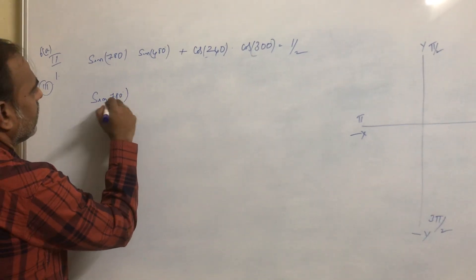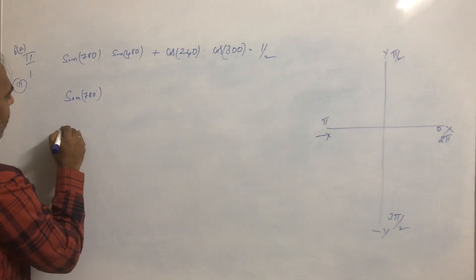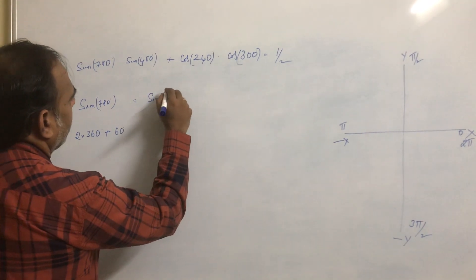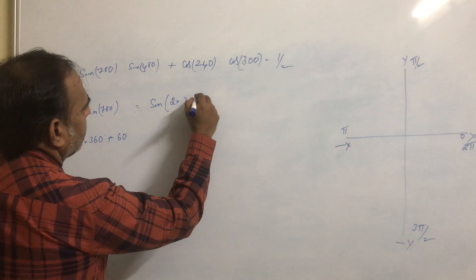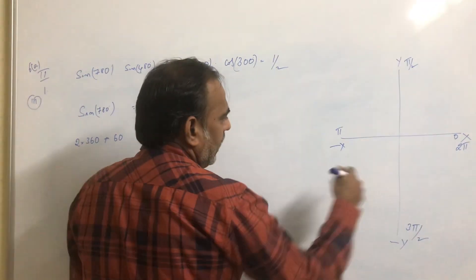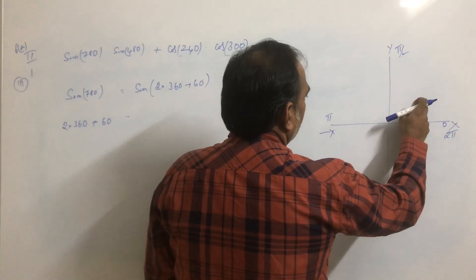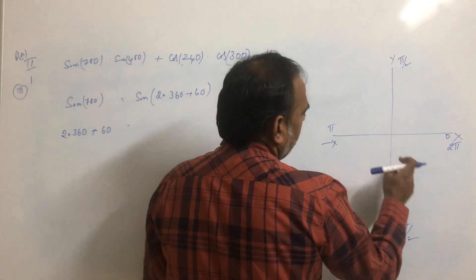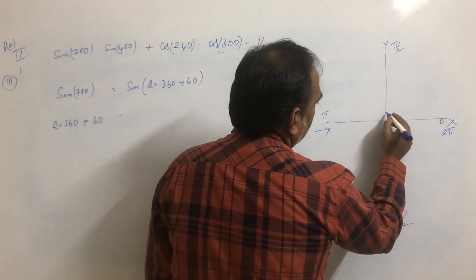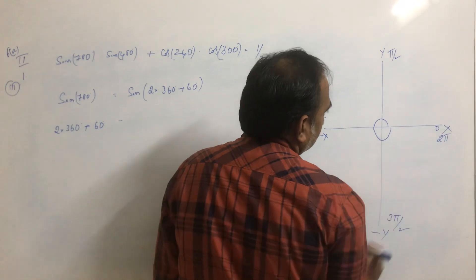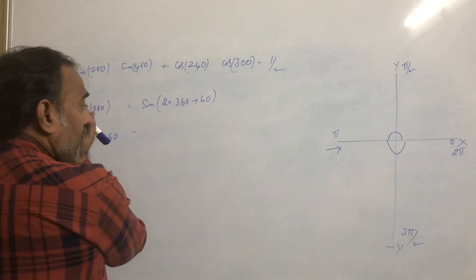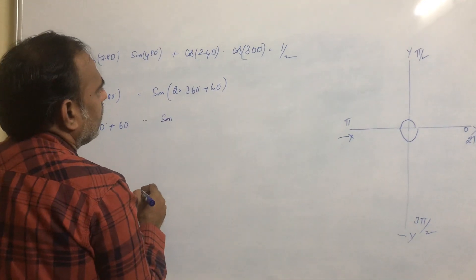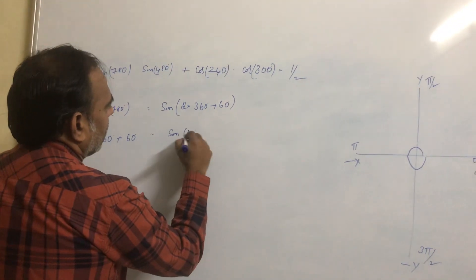First, take sin780. How can we write 780? We can write it as 2×360 + 60. Now, using the coordinate system — first, second, third, and fourth quadrants at 90°, 180°, 270°, and 360° — we determine which quadrant this falls in. It is in the first quadrant. So sin(2π + 60°) = sin60° = √3/2.